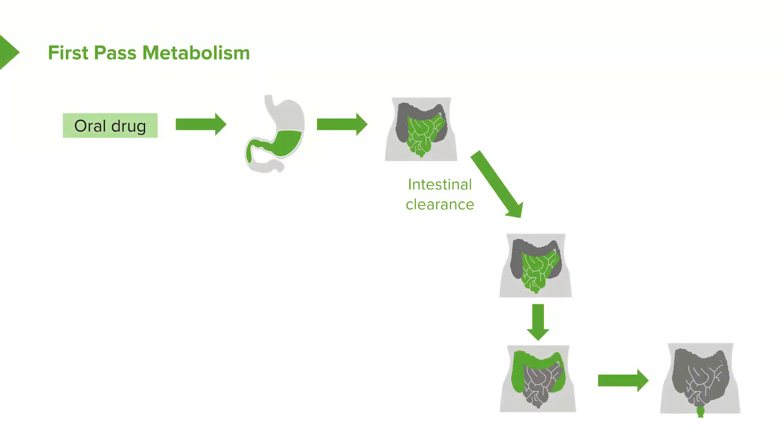What happens when that drug goes into the liver? Through the portal circulation, the drug will enter into the liver. It may or may not get processed or cleared and then it gets dumped back into the bowel through the bile.